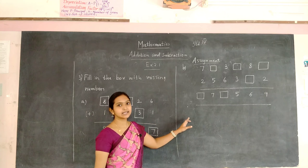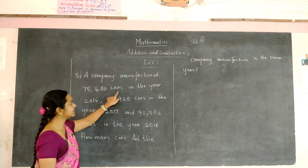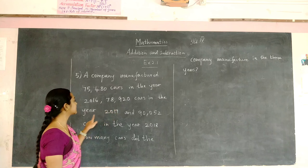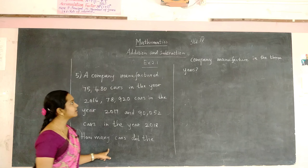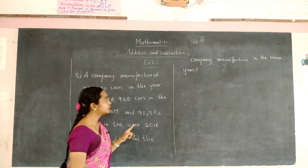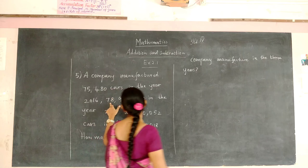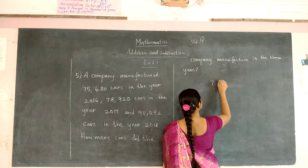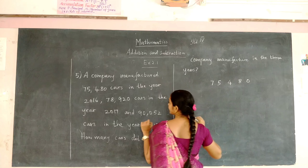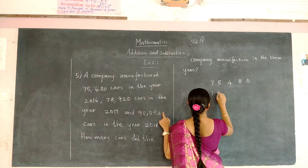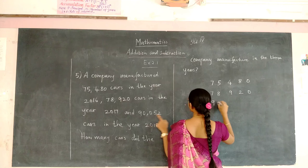Now you are going to do B as assignment. The 5th problem: a company manufactured 75,480 cars in the year 2016, 78,920 cars in the year 2017, and 90,052 cars in the year 2018. How many cars did the company manufacture in 3 years? To find this, you have to add the three numbers: 75,480, 78,920, and 90,052.